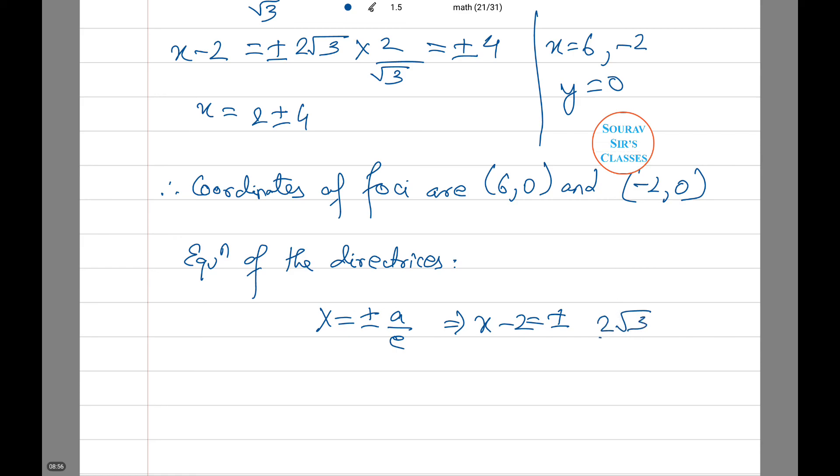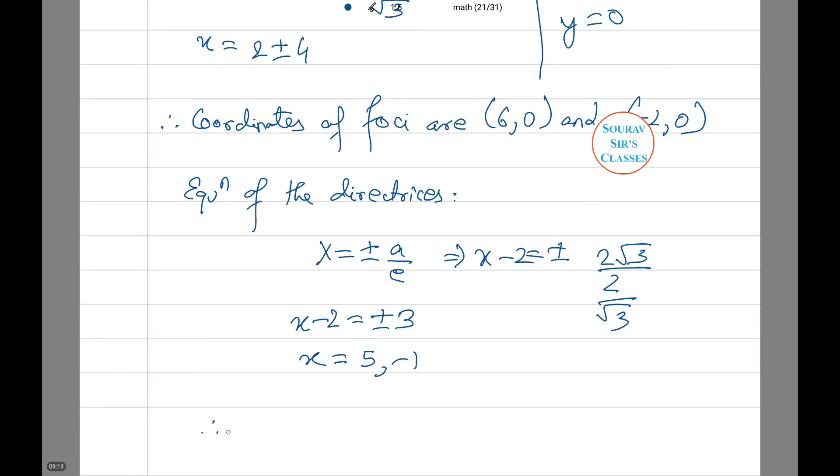Or x minus 2 equals plus minus 3. Therefore the values of x are 5 and -1. Therefore x equals 5 and x equals -1 are the required equations of directrices.